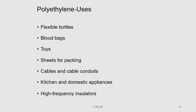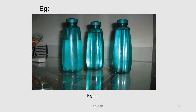The uses of polyethylene: it is used in the preparation of flexible bottles, blood bags, ties, sheets for packing, cable and cable conduits, kitchen and domestic appliances, and high frequency insulators. These water bottles, for example, are prepared by polyethylene.